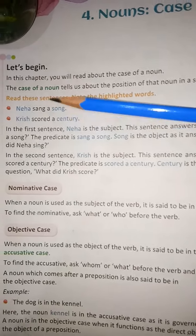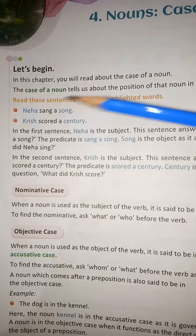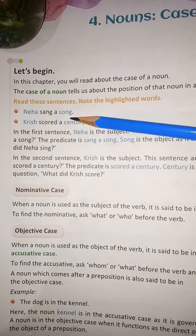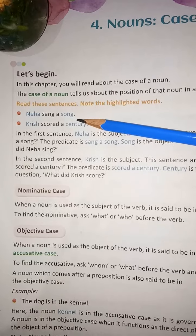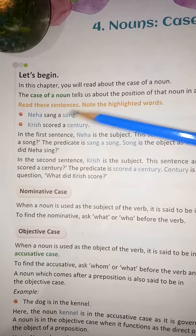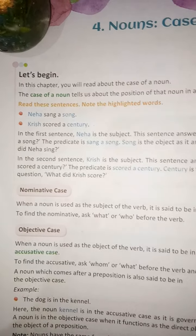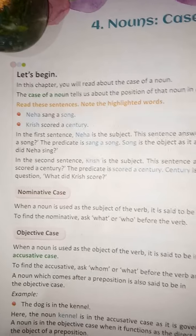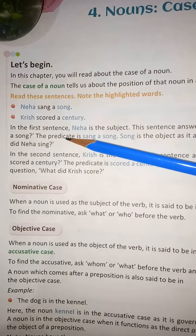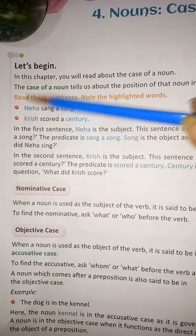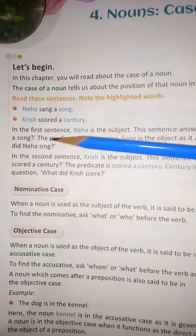To understand what happens to a noun's position in a sentence, read these sentences and note the highlighted words. 'Neha sang a song.' 'Krish scored a century.' In the first sentence, Neha is the subject — this sentence answers the question: who sang a song?